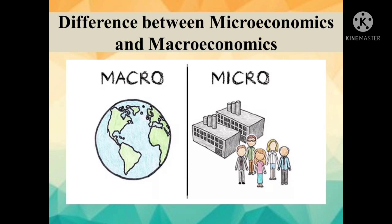But Macroeconomics aims to determine aggregate output and employment level of the economy. Microeconomics assumes that all the macro variables remain constant — it assumes that national output, consumption, saving, etc. are constant — but Macroeconomics assumes that all the micro variables remain constant when studying the level of output. Microeconomics is also known as Price Theory and Macroeconomics is also known as Income and Employment Theory.